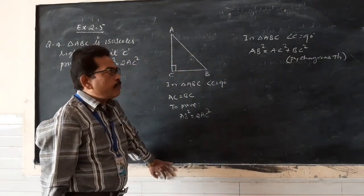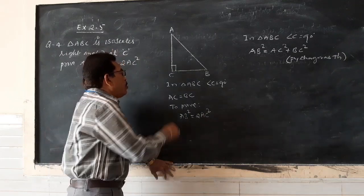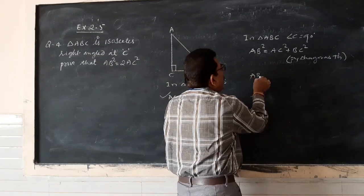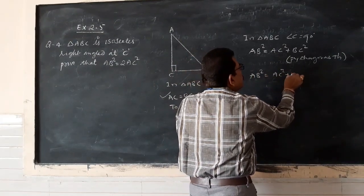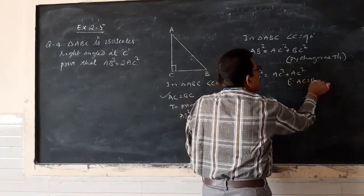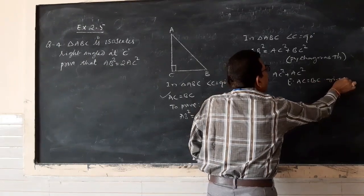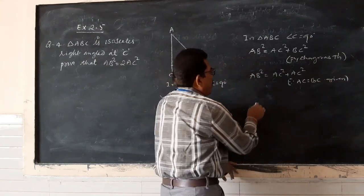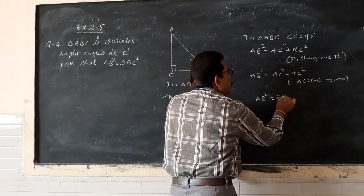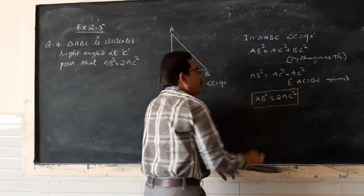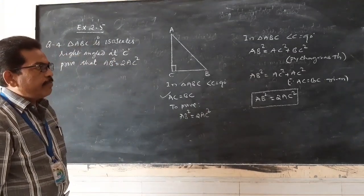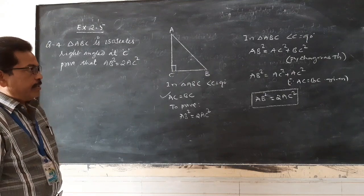By Pythagoras theorem: AB² = AC² + BC². But since AC equals BC, we replace BC with AC. Therefore AB² = AC² + AC² = 2AC². Hence proved: AB² = 2AC².